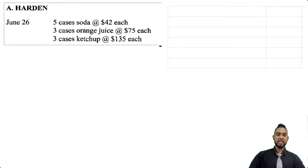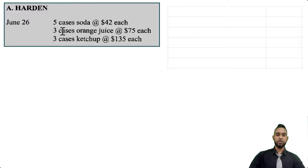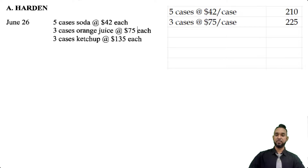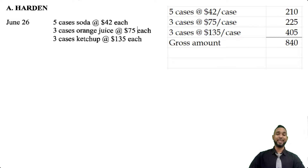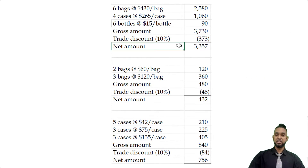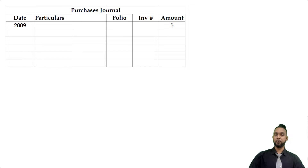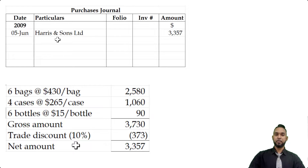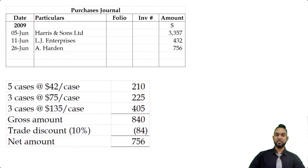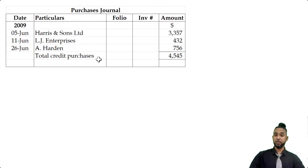The third set of purchases was from A. Harden on June 26th: five cases of soda at $42 each is $210, three cases of orange juice at $75 each is $225, three cases of ketchup at $135 each is $405, totaling $840. Ten percent trade discount is $84, leaving $756. We put each of these figures in the purchases journal, which shows credit purchases. Harris and Sons: $3,357; LJ Enterprises: $432; A. Harden: $756 — totaling $4,545, representing total credit purchases for the month, transferred to the purchases account in the general ledger.